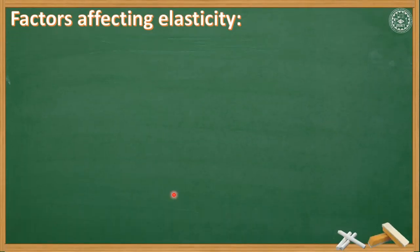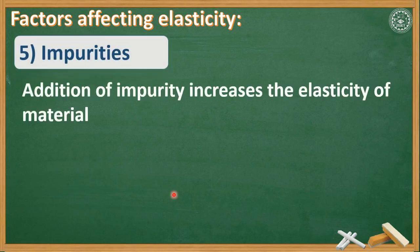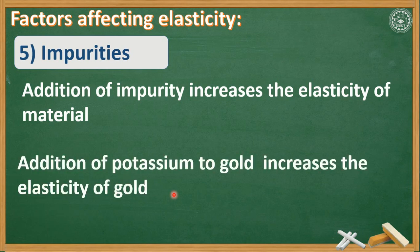Our last factor is impurities. Addition of impurity increases the elasticity of a material. Addition of potassium to gold increases the elasticity of gold. Pure material mixed with another substance through a process like doping increases elasticity.